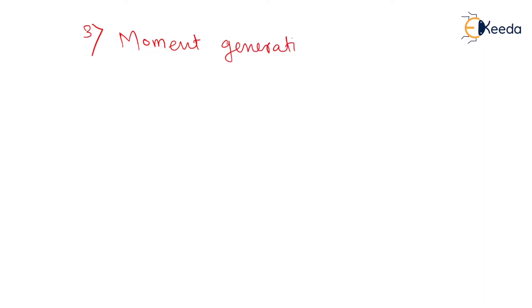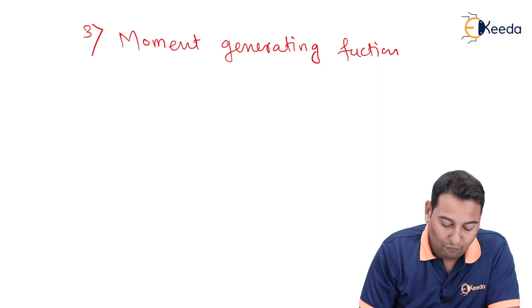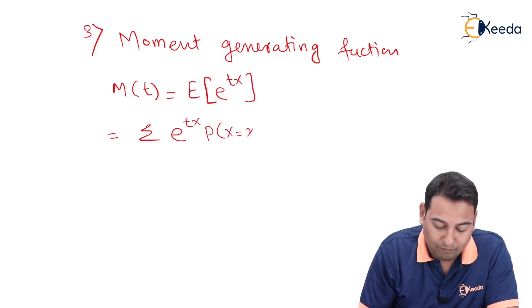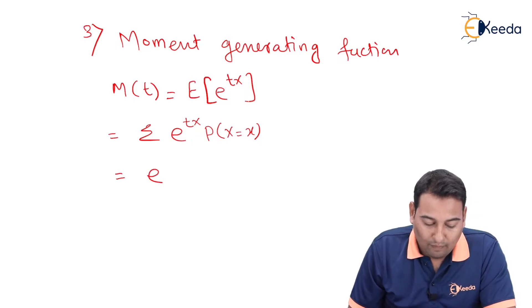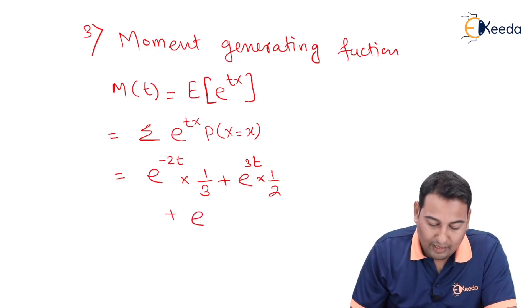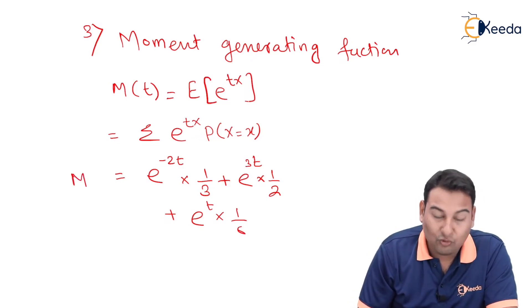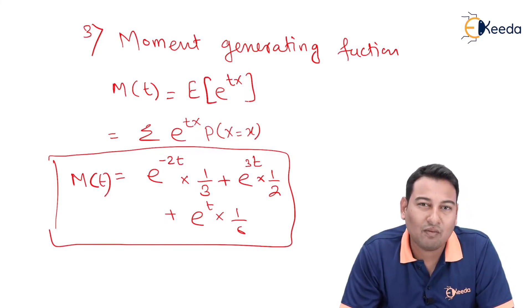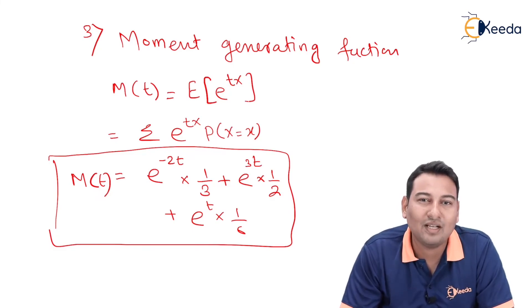The last part of the solution is the moment generating function. The formula is M of t equals the expectation of e raised to tx, which equals the summation of e raised to tx into p of x. Substituting the values: e raised to minus two t times one-third, plus e raised to three t times one-half, plus e raised to t times one-sixth. This is the moment generating function. Hope you understood — in the next video we'll discuss one more example. Thank you.